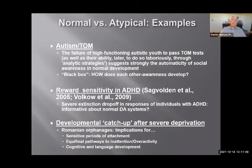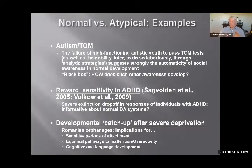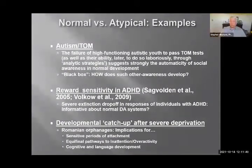How do most kids, without ever being taught, form theory of mind between ages three and four? Kids with high-functioning autism seem not to, although they can figure it out analytically when a bit older. Models of ADHD from Europe on reward sensitivity have really informed motivational theories of normative child development. The infamous Eastern European-Romanian adoption studies have taught us a lot about critical or sensitive periods of attachment and bonding, with implications for inattention, overactivity, and interpersonal relationships later in life.